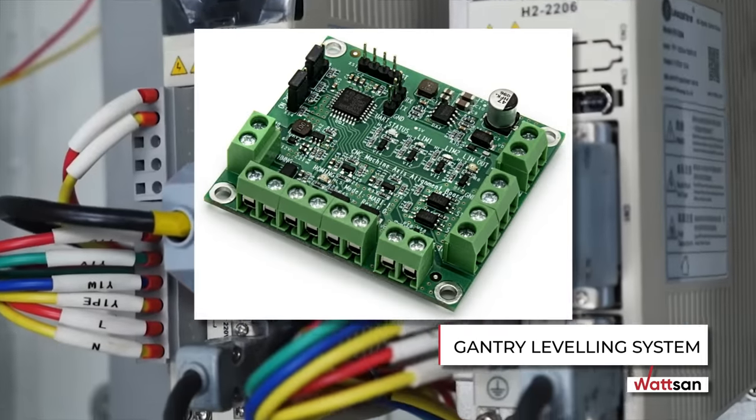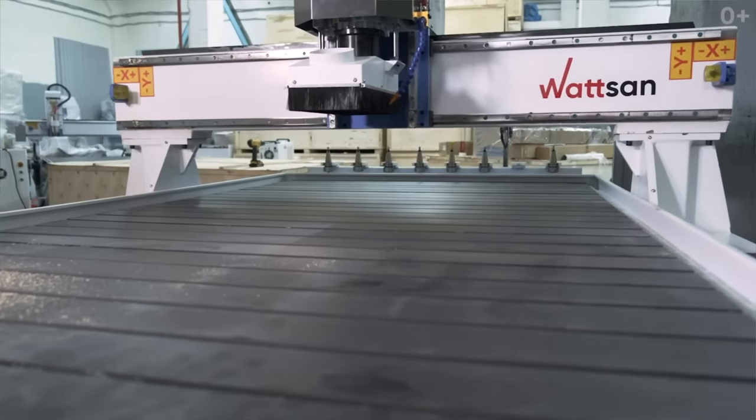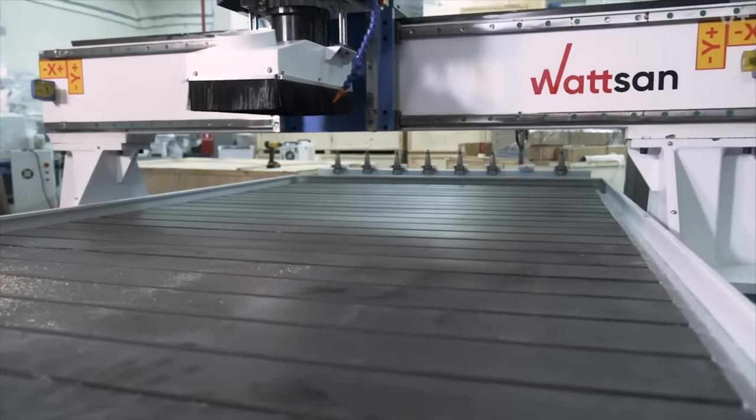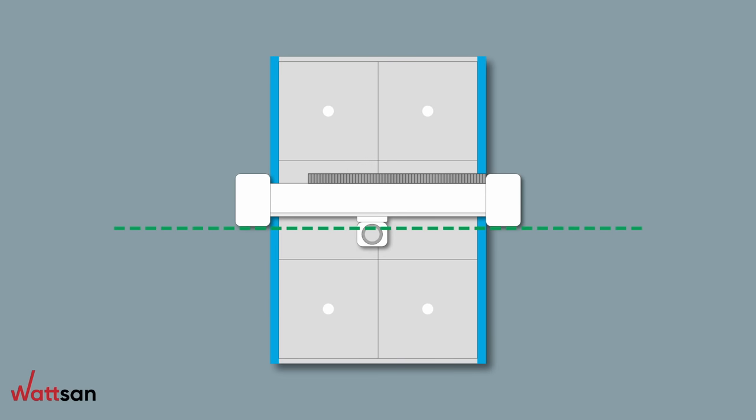Gantry Leveling System: The system automatically aligns the gantry along the y-axis. If the gantry is not aligned, it is not perpendicular, which can lead to jamming of one of the drives and skipping steps.